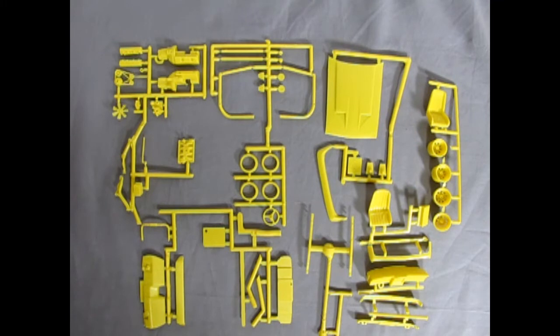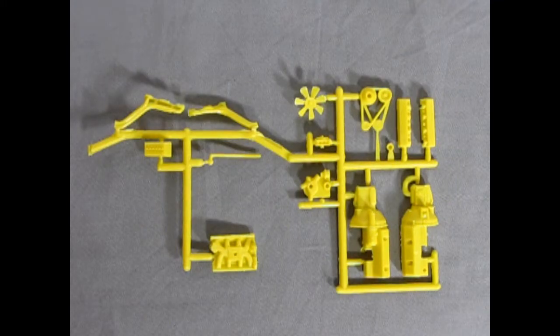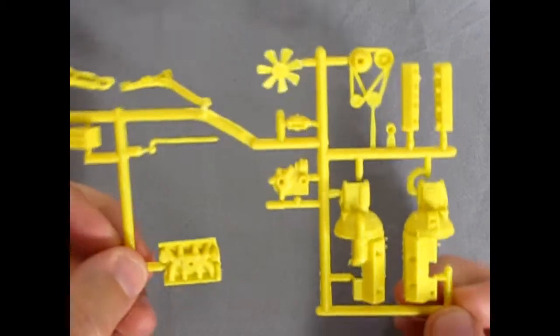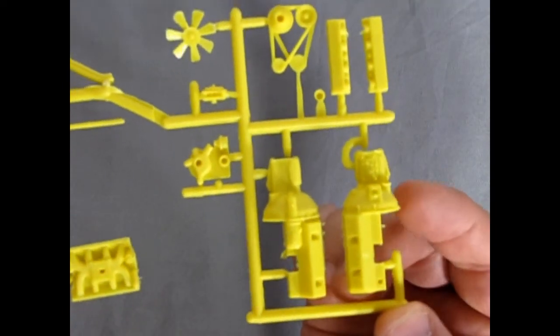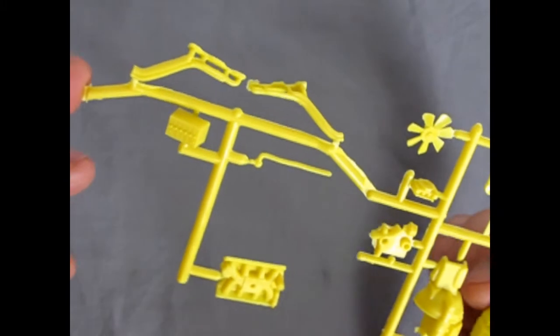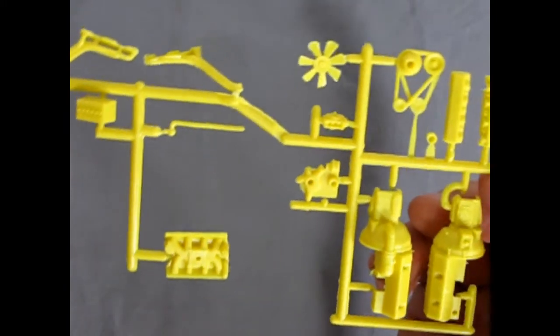These sprues represent the rest of our yellow plastic components. Our first parts tree consists of all the engine components as well as the battery for underneath the hood and again you can see that the detail is not too bad on these. A little bit light for the more professional modeler but this should go together and end up looking good on the shelf.